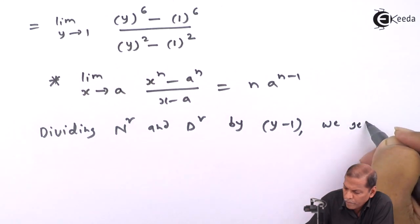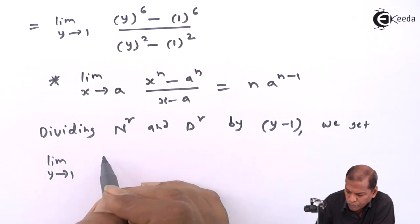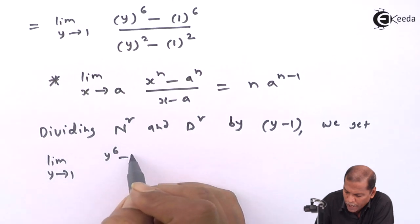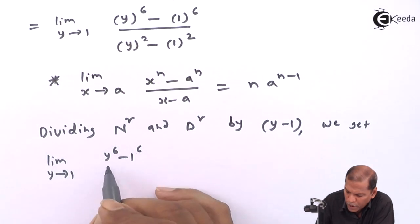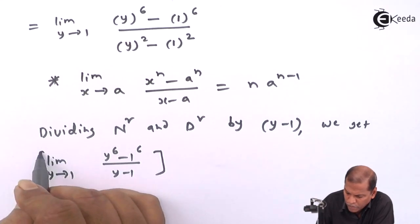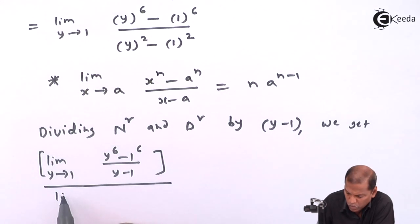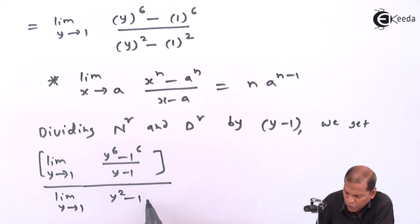We get limit as y tends to 1 of (y^6 - 1^6)/(y - 1) over limit as y tends to 1 of (y^2 - 1^2)/(y - 1).